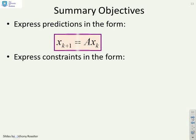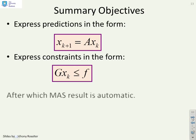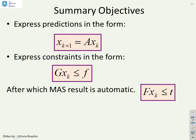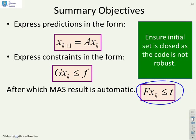So summary, what have we done? We've said let's express the predictions in the form xk plus 1 equals ax, and express the constraints in the form gx less than or equal to f, and after which we can find an MAS in the form given here.